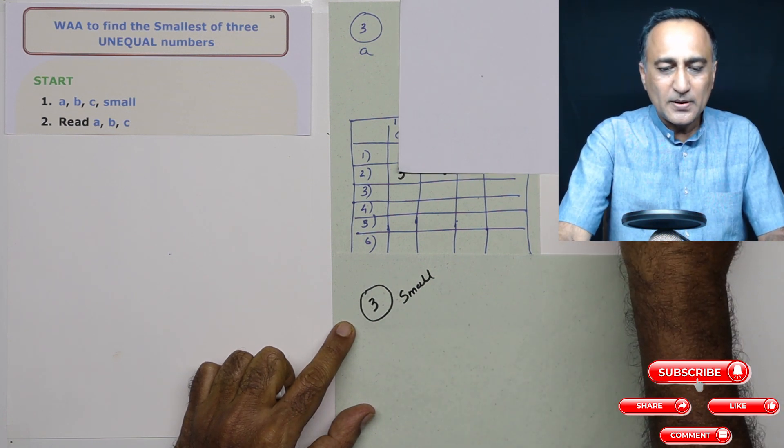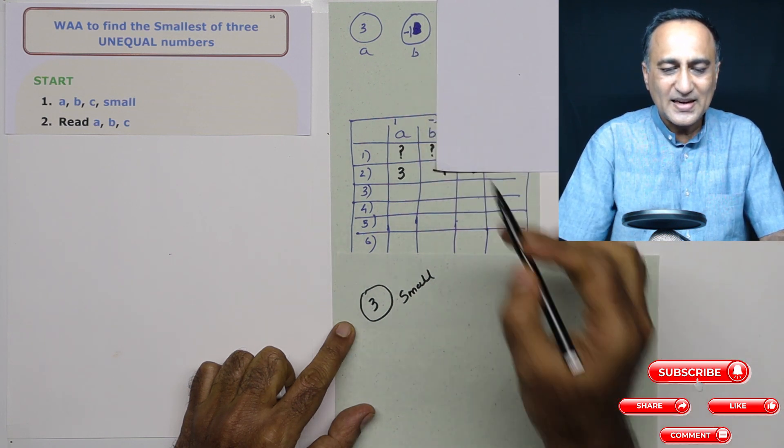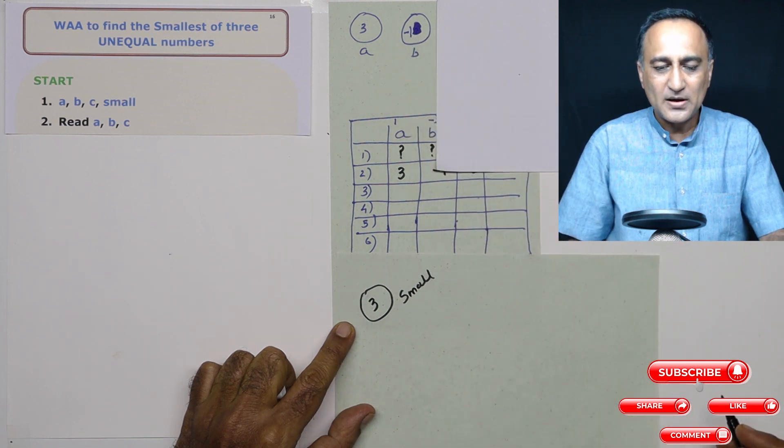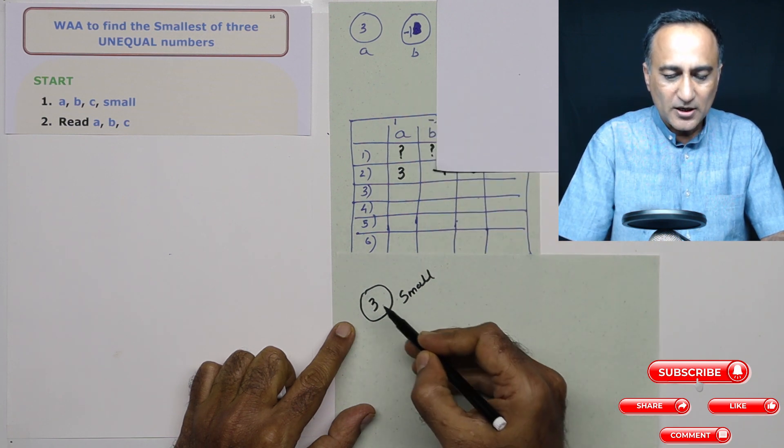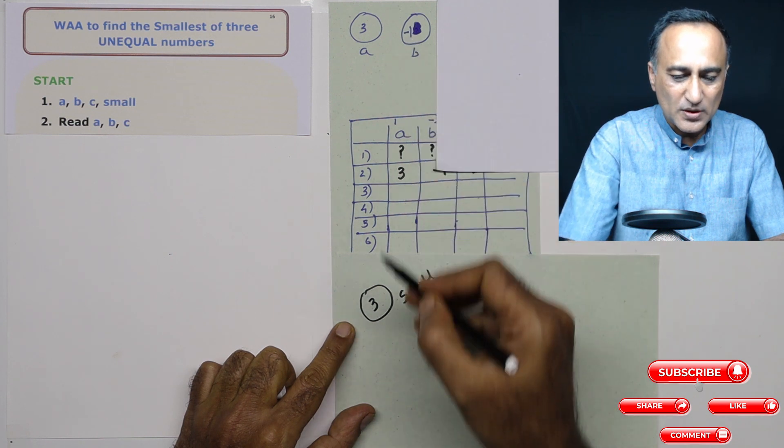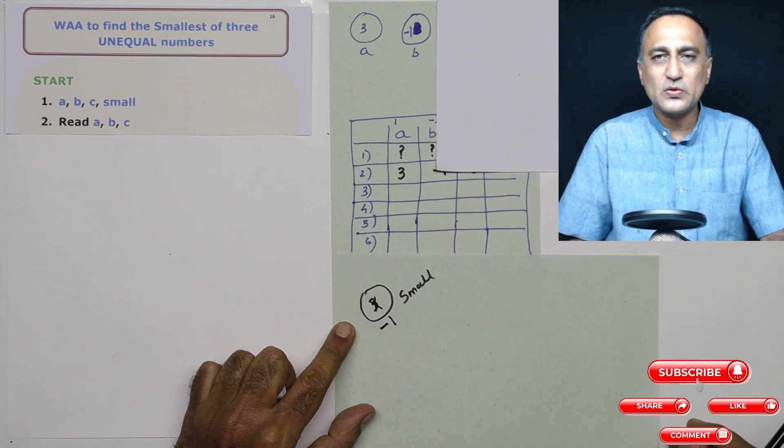Now let me move the paper a bit. When I see variable b, I see that the value of variable b contains minus 1. So I compare b with small. Now 3 is definitely bigger than minus 1, so minus 1 is smaller than 3. So my new small happens to be minus 1.